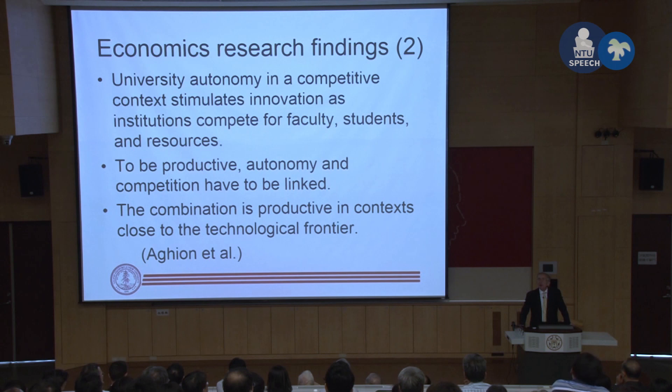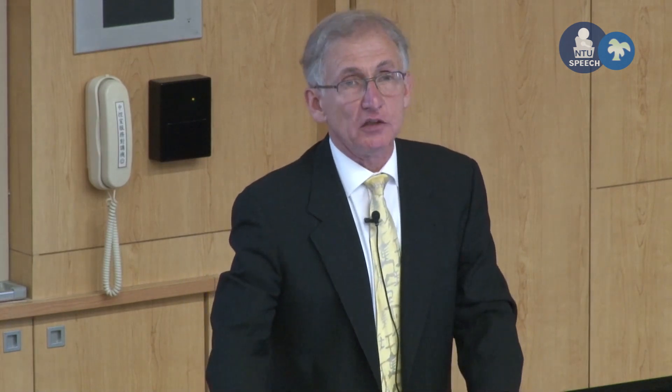A key finding comes from Jonathan Cole, who was provost at Columbia for many years. Professor Cole found that in the sciences, the top 5% of most productive scientists produce 50% of the science — a steep stratification. As a result, there is a great advantage in matching the best resources to the most productive faculty. There are some disadvantages to this competitive environment: with the decline of state support, public universities have suffered declining resources and become more dependent on private tuition and donations.